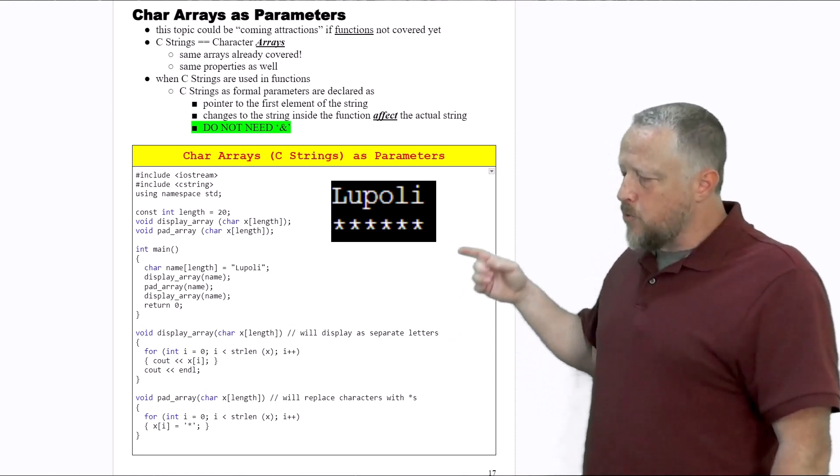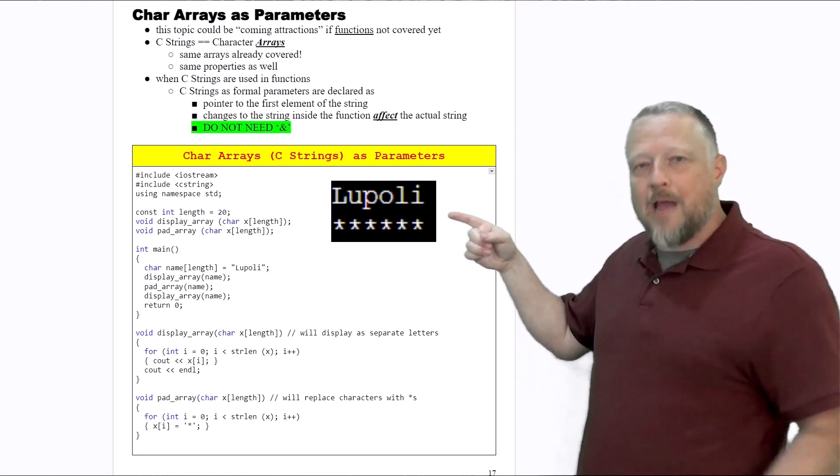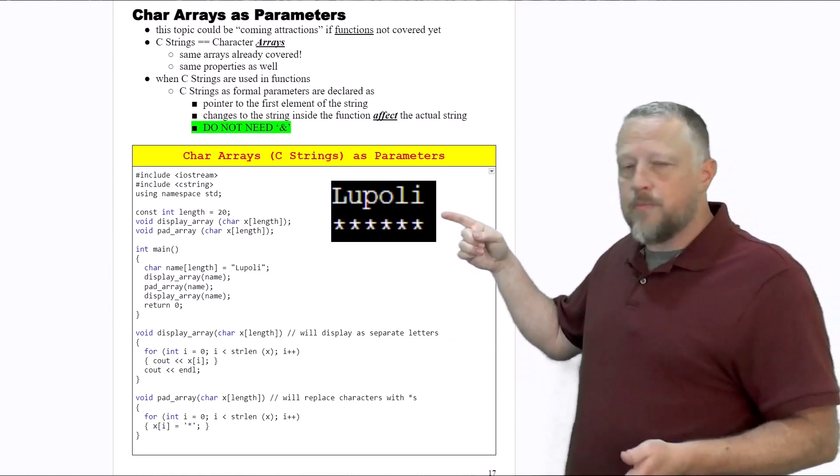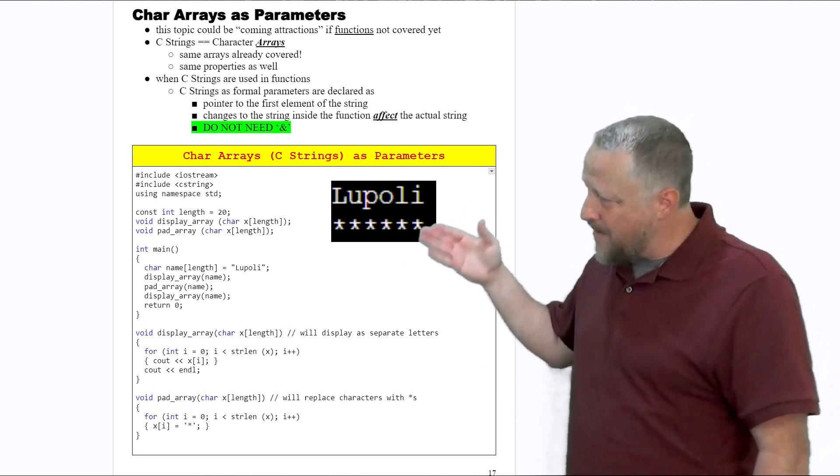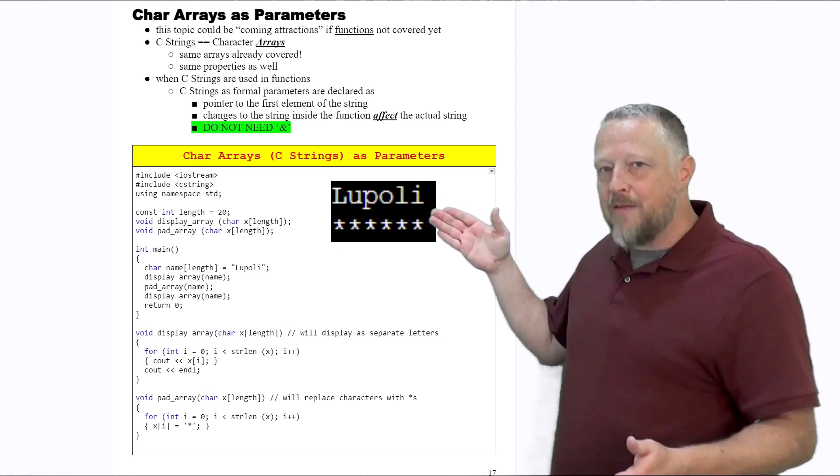What do I mean by that? I'm going to be passing in a very simple string of loophole and then converting it to all stars. So I have to pass in the array, has to have some values in it.